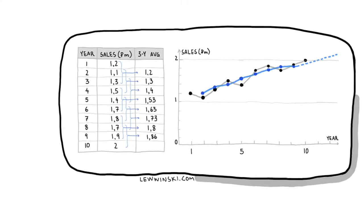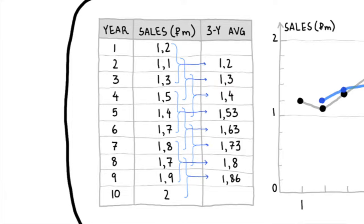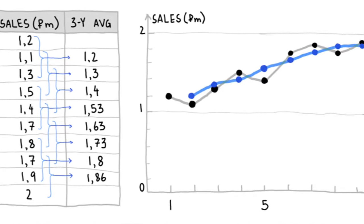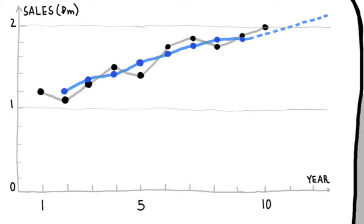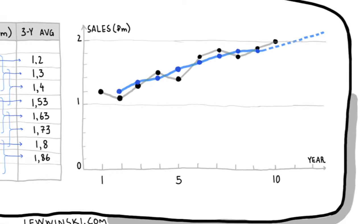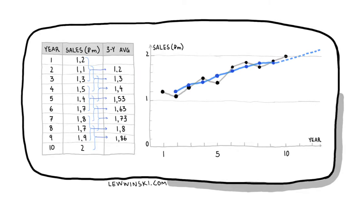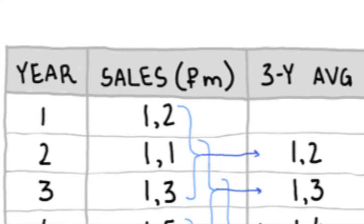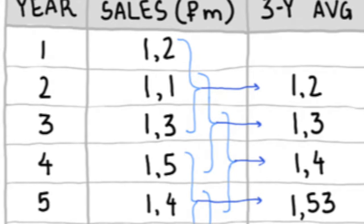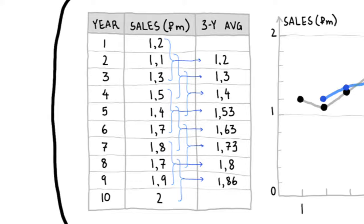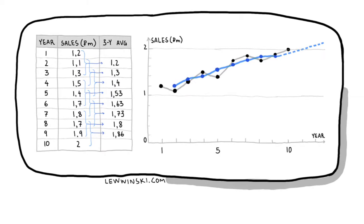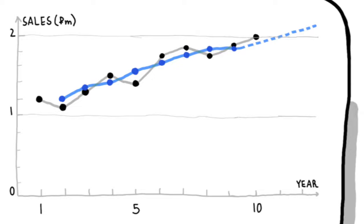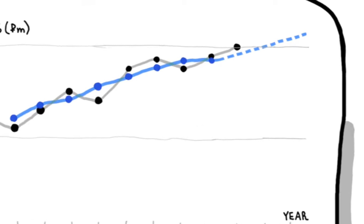Here you can see sales data in millions of rubles for 10 years. If we just use the past data for sales, then the chart is going to look like the gray line – it looks pretty jumpy, going up and down. But if we calculate a three-year moving average, then the trend would look much smoother. We calculate averages of three years: first, years one, two, three; second, years two, three, four; third, years three, four, five, and so on. You can see all the moving averages in the third column. If we put these numbers on a chart, we'll see a blue line that looks much smoother than the gray line, making it easier to extrapolate the trend. The dotted line shows this extrapolation – we just continue the trend for the future, thus predicting the sales. This is how three-part moving average works.